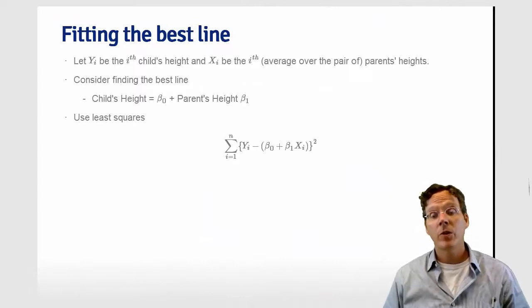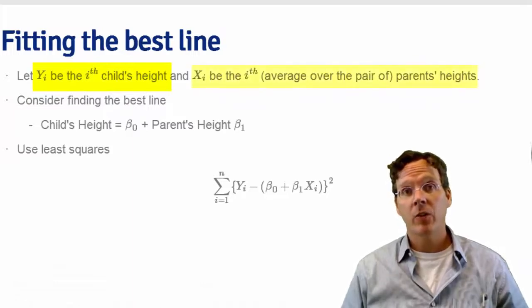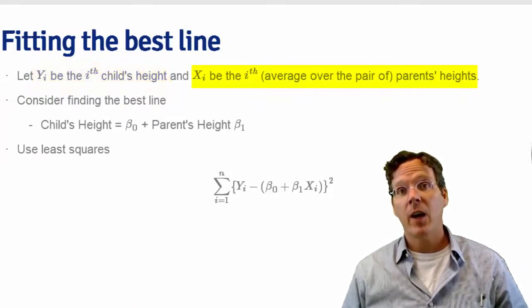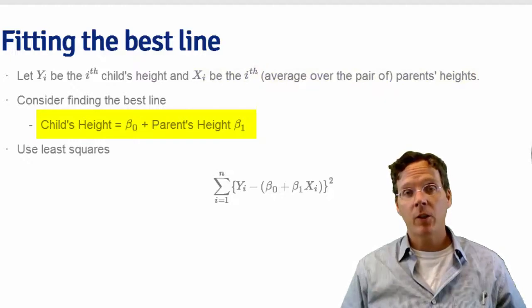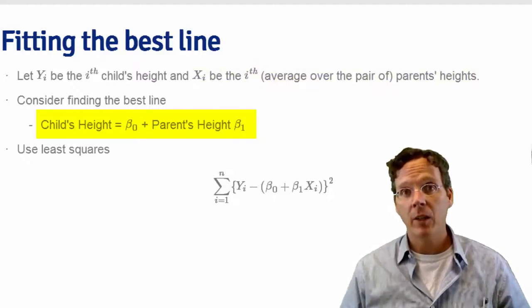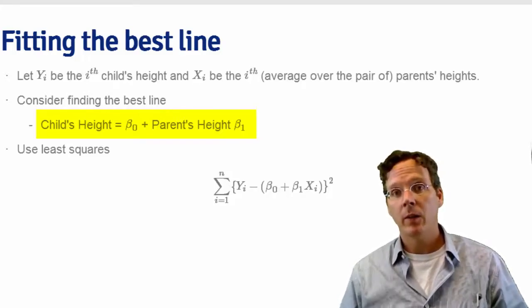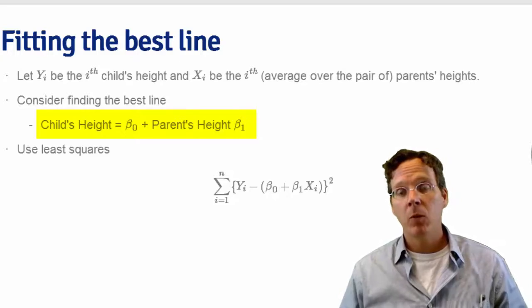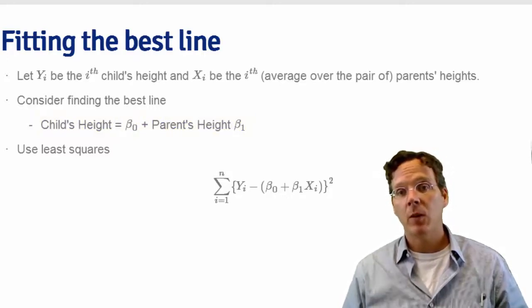We're going to use our notation that we developed in our last lecture. Let yi be the ith child's height, and xi be the ith parent's height. Now we want to find the best line, where the line looks like child's height is an intercept, which let's label beta naught, plus the parent's height times a slope, which we're going to label beta 1. So beta naught and beta 1 are parameters that we would like to know that we don't know. We need a criteria for the term best. We need to figure out what we mean by the best line that fits the data.